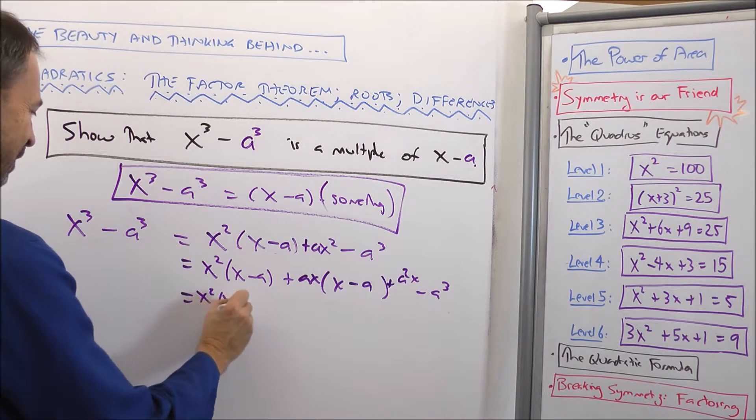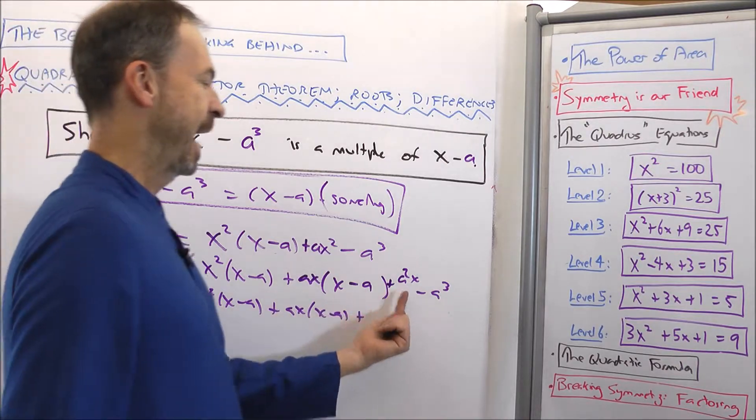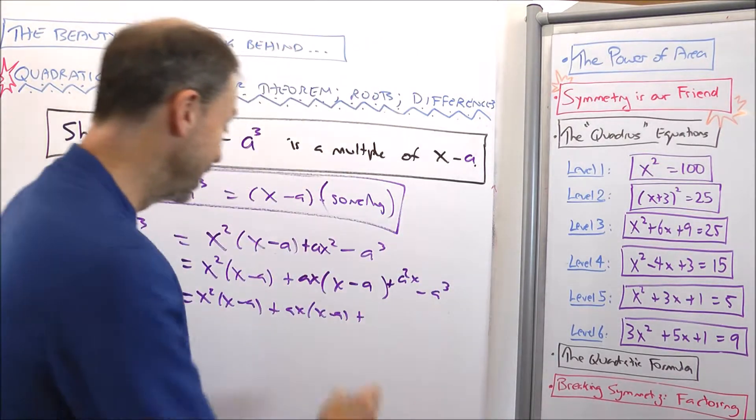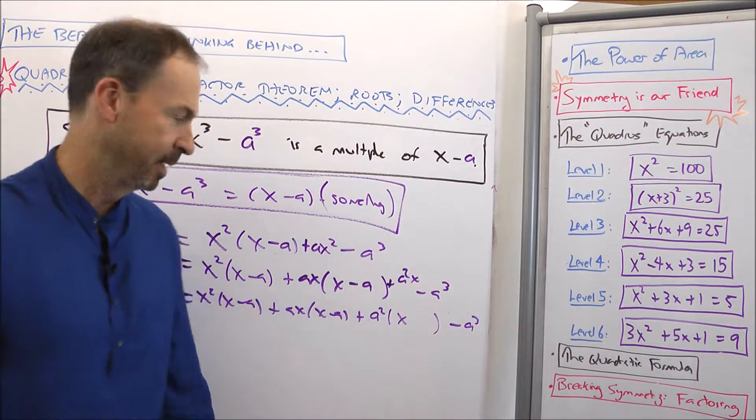So far so good? Let me keep going. So now I've got x² times (x minus a) plus ax times (x minus a) plus a²x, which is a multiple of x. It's a² times x, and there's still a multiple of negative a³ on the end.